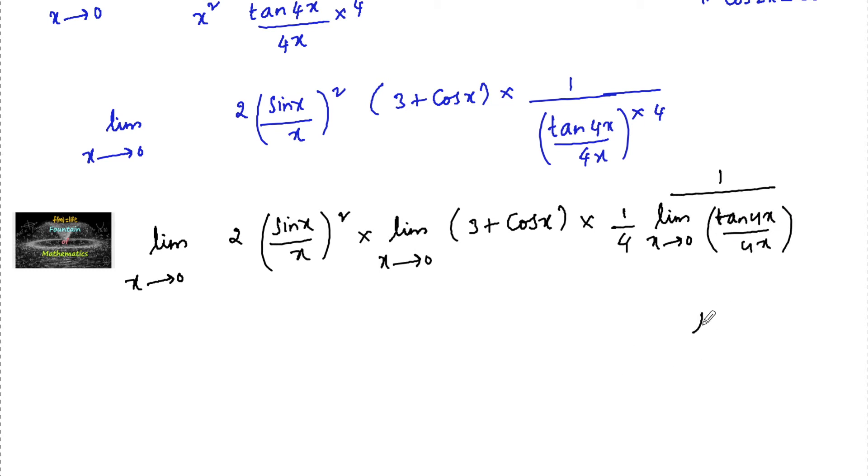Since we know that limit extends to 0 of tan x by x and sin x by x is equal to 1. Limit extends to 0 of tan x by x is equal to 1.